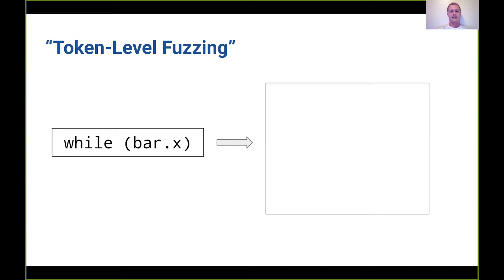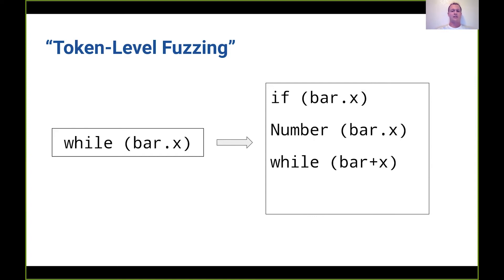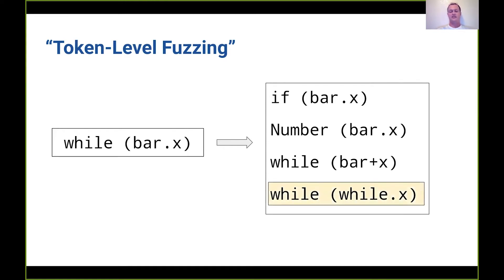Taking that same example — while bar.x — and applying token-level fuzzing, we might get 'if bar.x', 'number bar.x', 'while bar plus x', and 'while while.x'. Some of those are still syntax errors, but that's fine. Most of these inputs are much better mutations than what you saw from byte-level fuzzing. And because we're using a coverage-guided fuzzer, token-level fuzzing can still explore iteratively — it will hit more code coverage and generate better inputs.